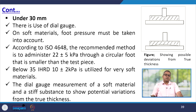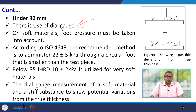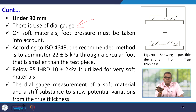For under 30 mm, there is use of a dial gauge. On soft material, foot pressure must be taken into account, and as per ISO 4648 the recommended method is to administer 20 plus or minus 5 kilopascal through a circular foot smaller than the test piece. For very soft materials below 35 IRHD, 10 plus or minus 2 kilopascal is utilized, and there is potential variation from true thickness when measuring soft versus stiff substances.